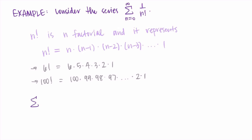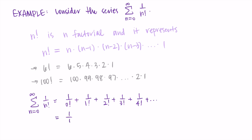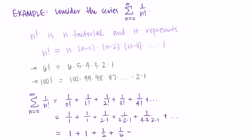Looking at the terms of this series starting at n equals 0: 1 over 0 factorial, plus 1 over 1 factorial, plus 1 over 2 factorial, plus 1 over 3 factorial, plus 1 over 4 factorial, and so on. We take the convention that 0 factorial equals 1. So I'm getting 1 over 1, plus 1 over 1, plus 1 over 2, plus 1 over 6, plus 1 over 24, and so on — which is 1 plus 1 plus one half plus one sixth plus one twenty-fourth, etc.